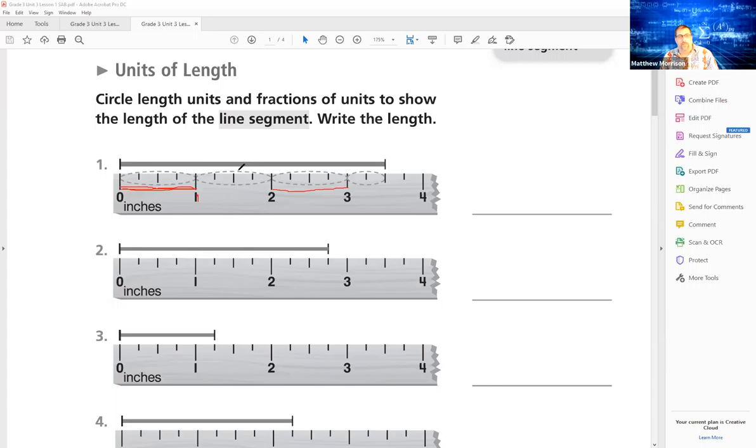You'll also notice that in the middle we have other numbers or other lines I should say. These are other measurements. This right here, the long one in the middle, is one half because there are two equal pieces here and here. Then we have these other even smaller ones. How many are there between here and here? We have one, two, three, four, so those are fourths, so one fourth and three fourths.